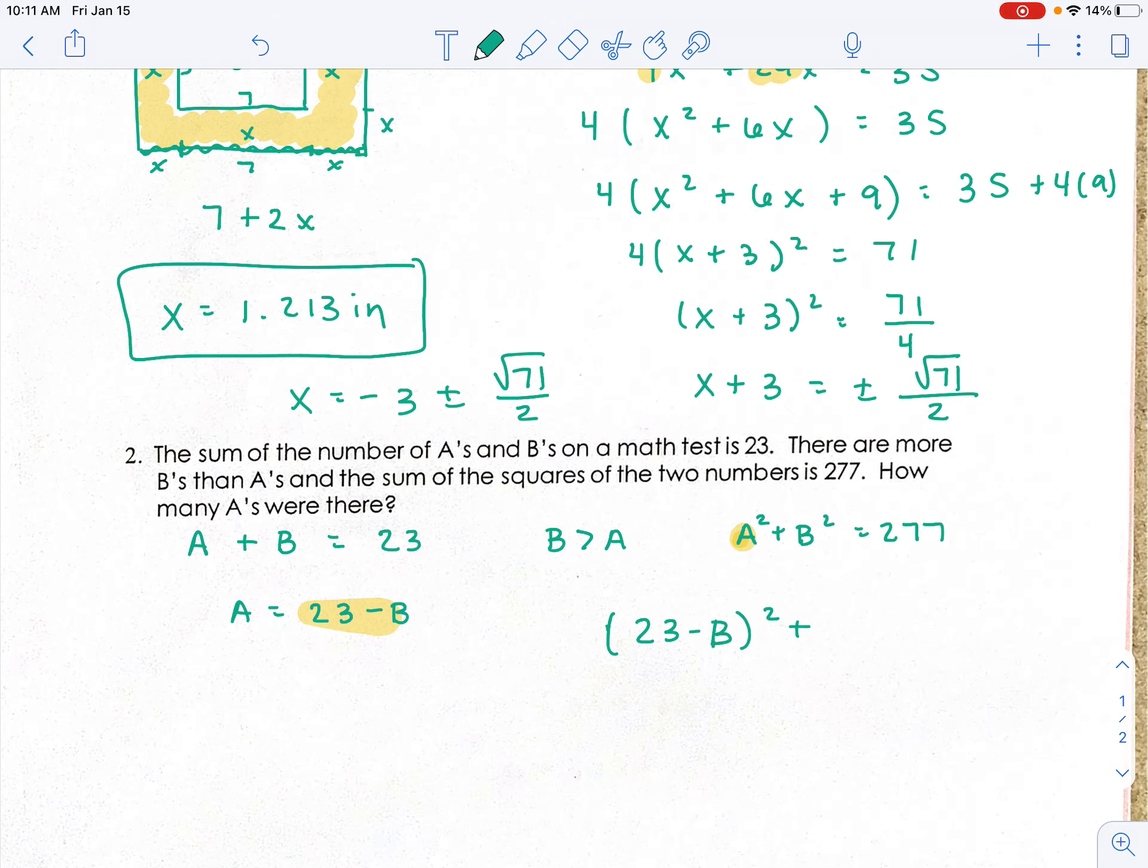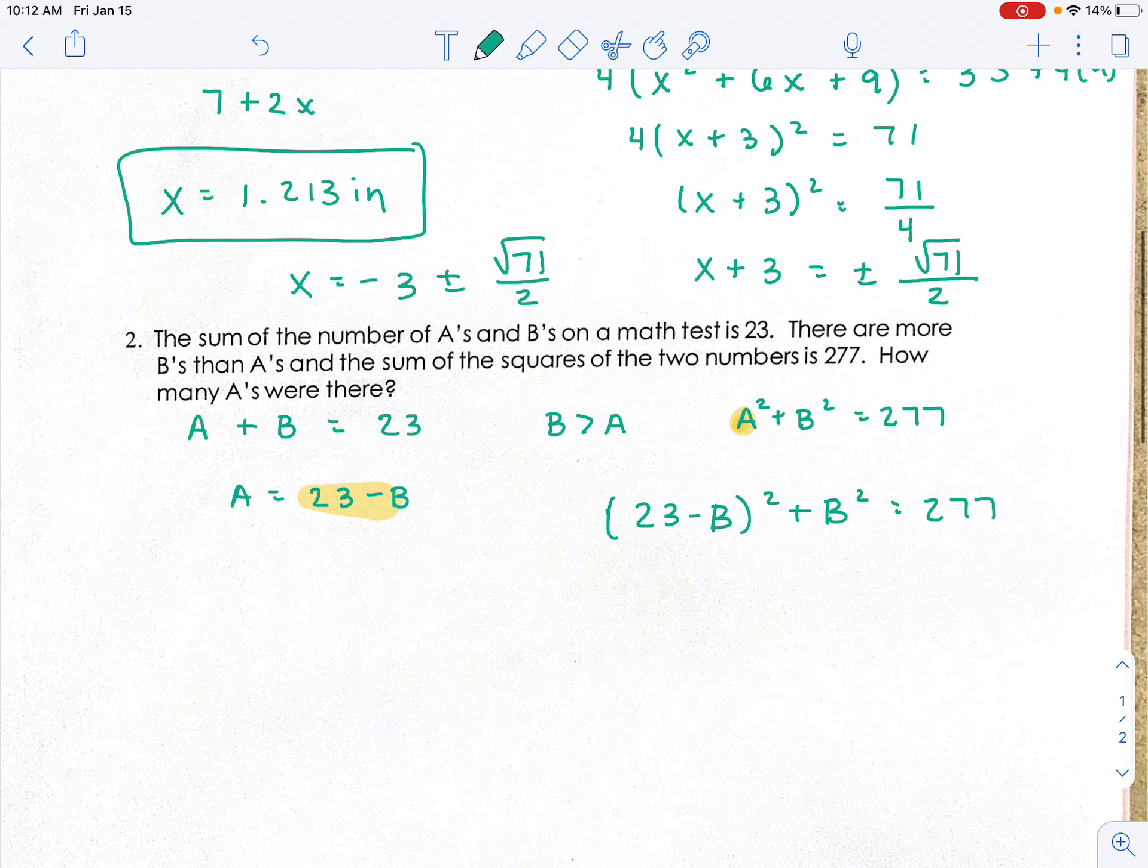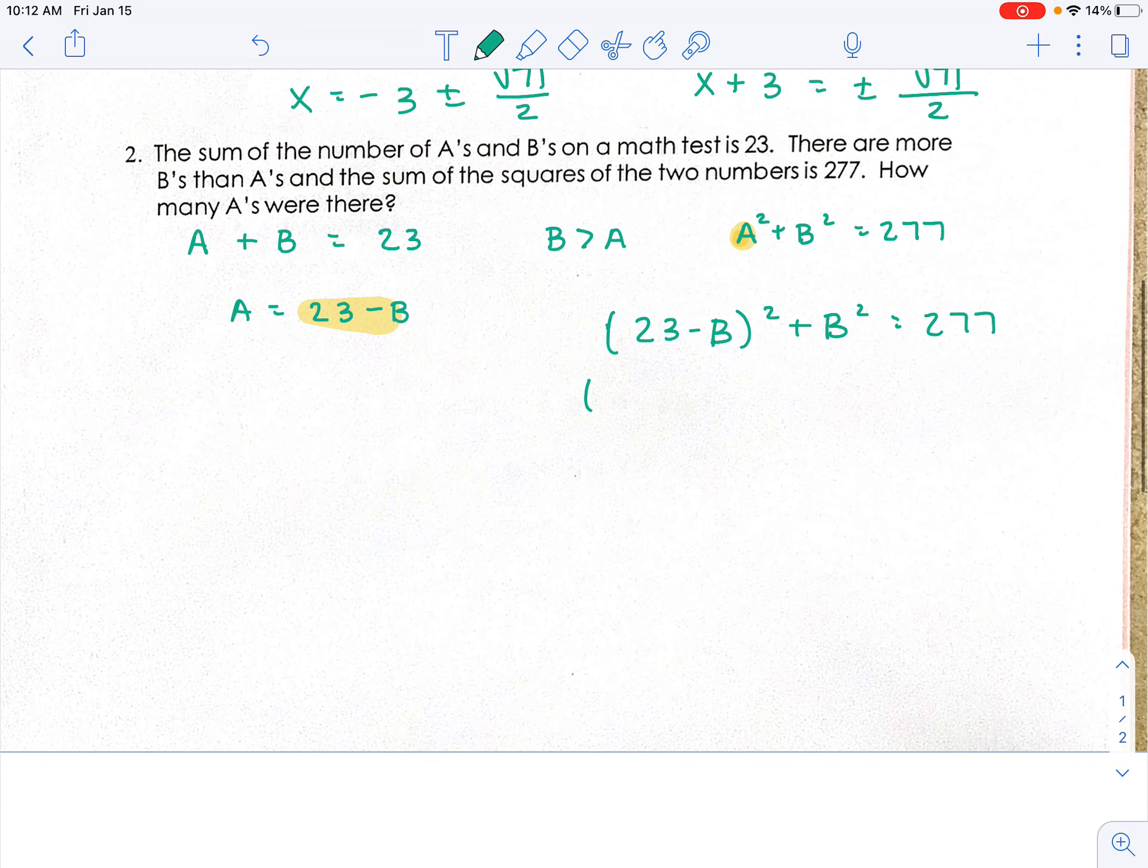So I'd have (23 - B)² + B² = 277. All right, if I write this out so I can FOIL it, (23 - B) times (23 - B) plus B squared.